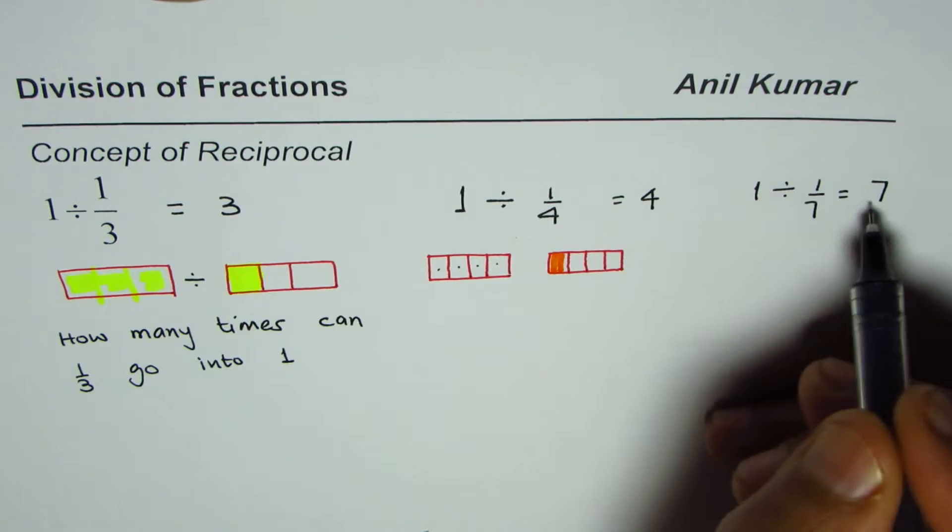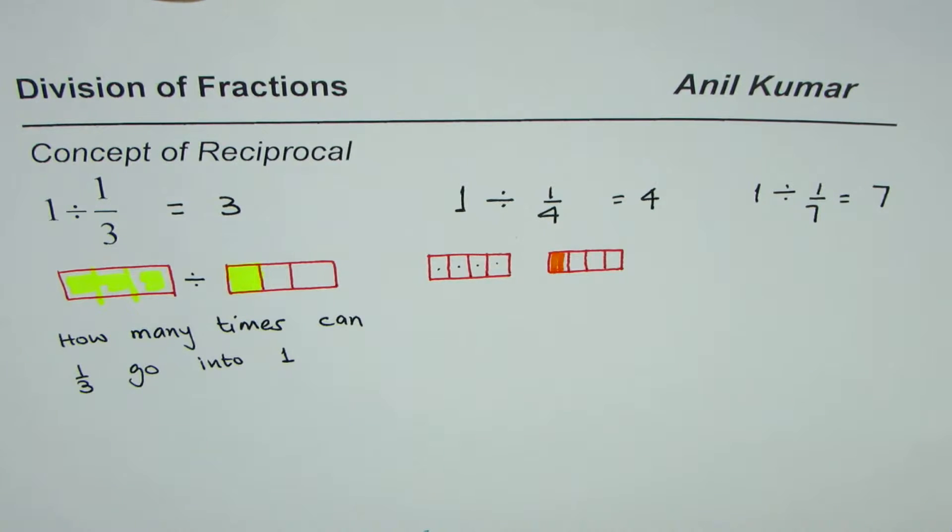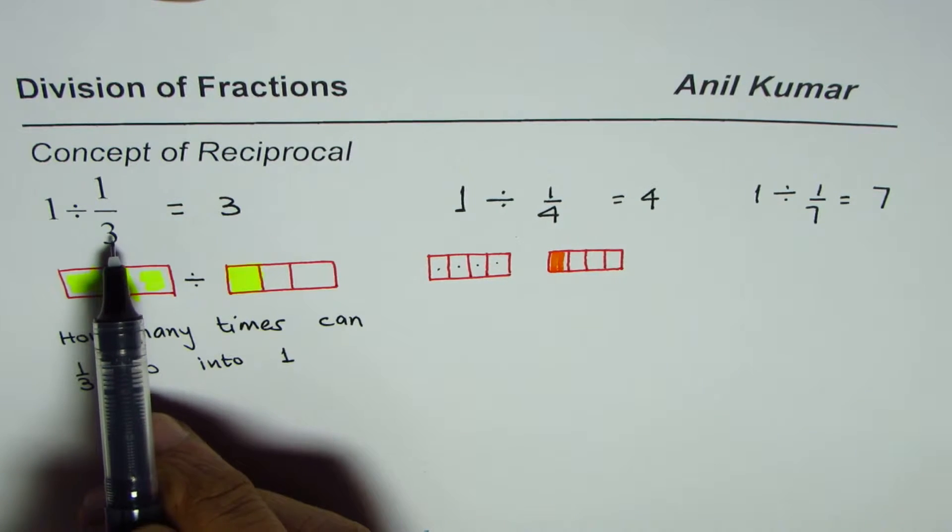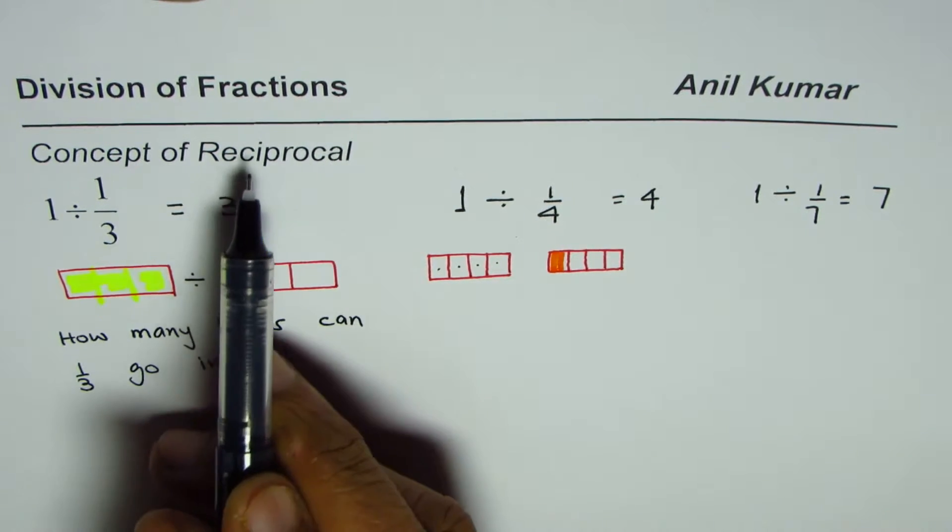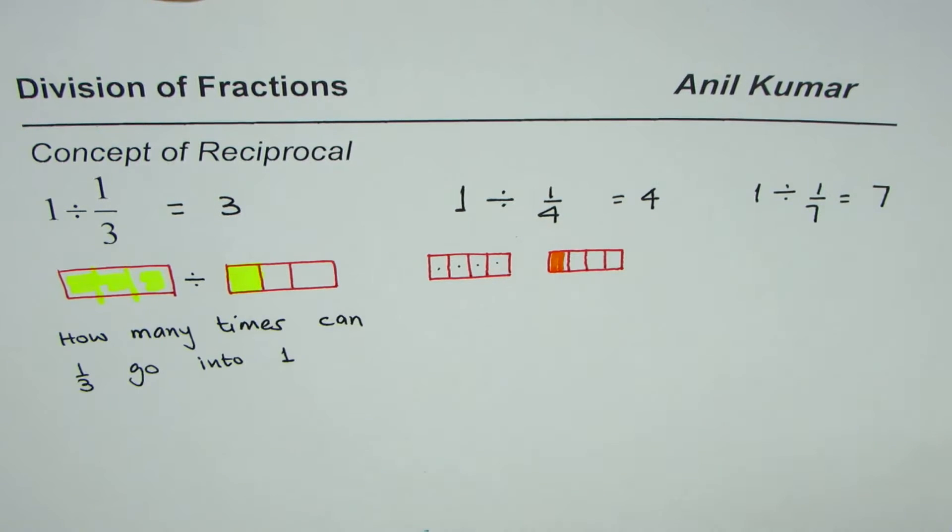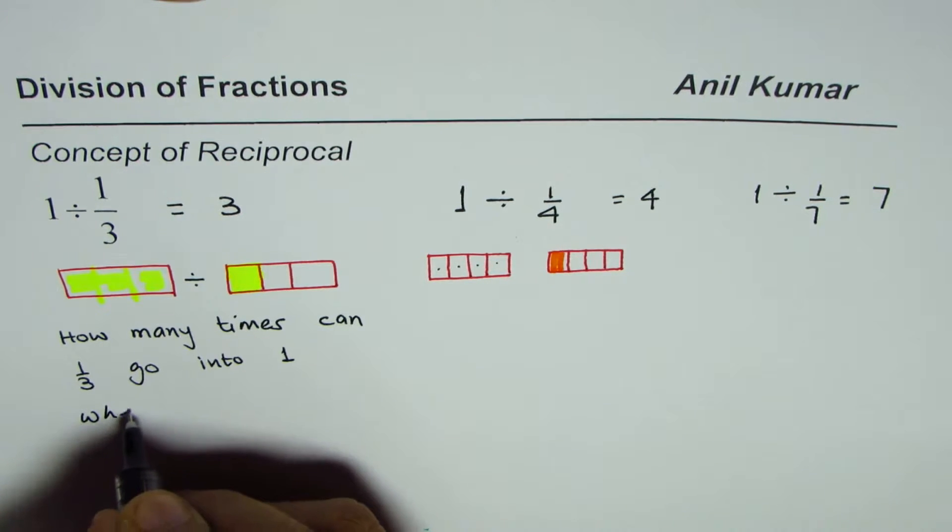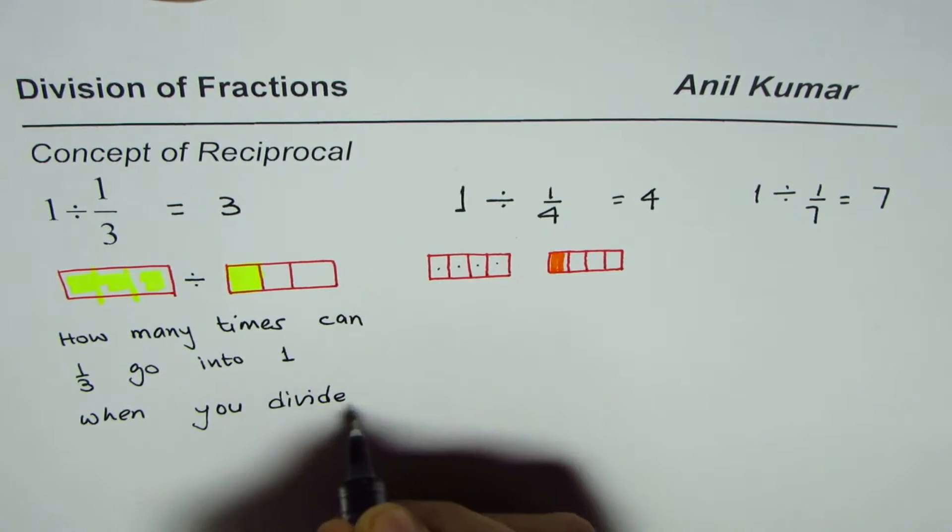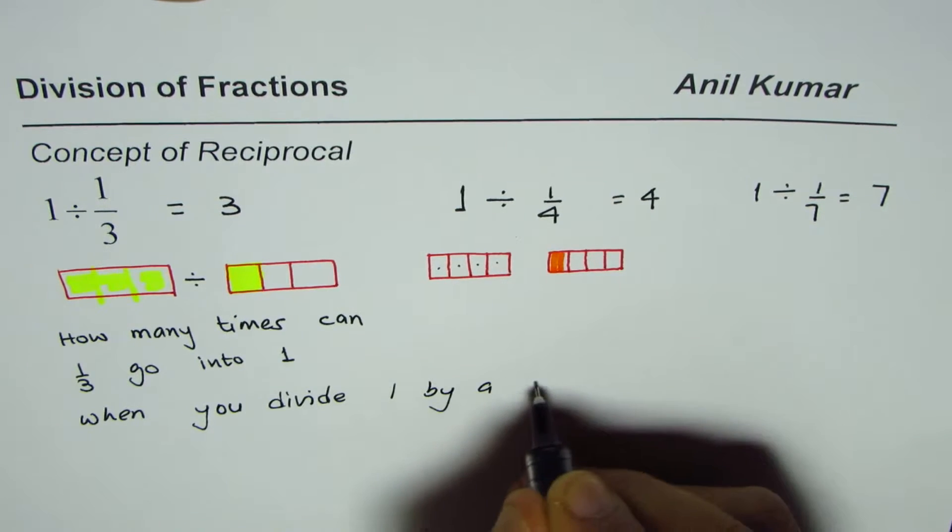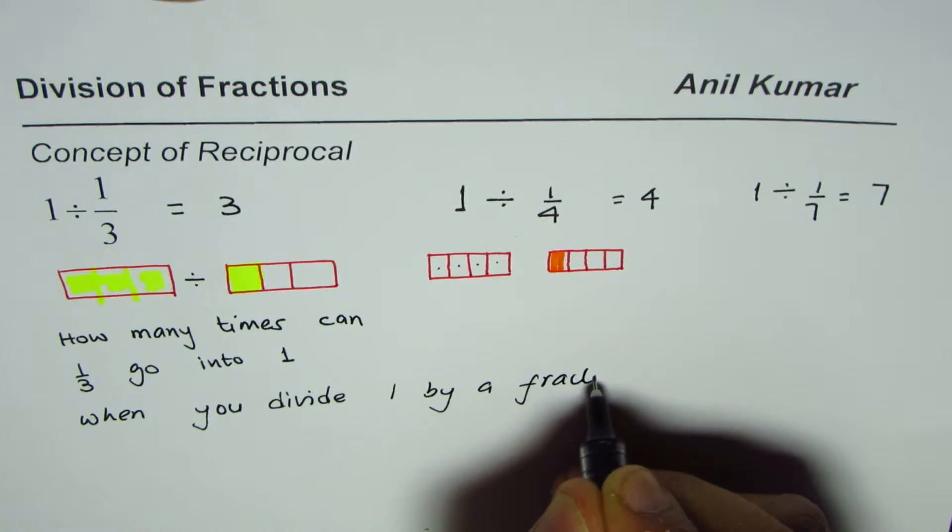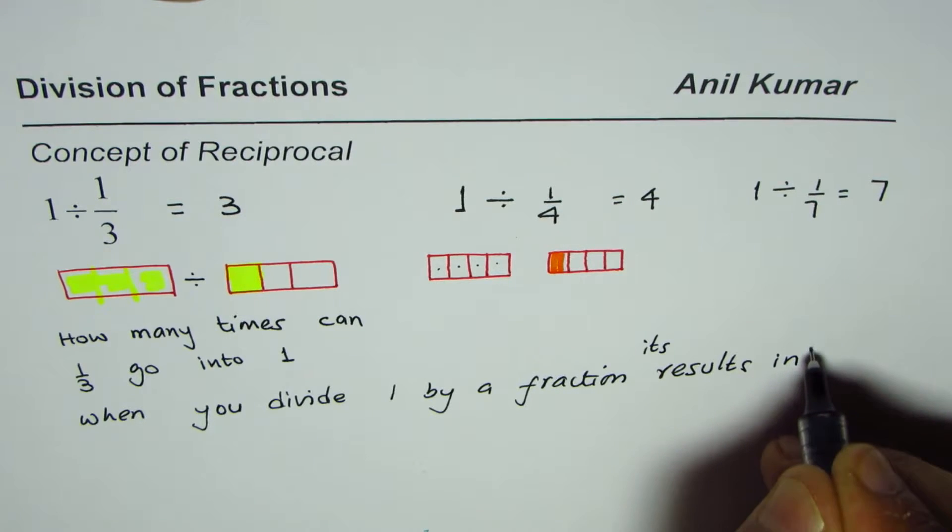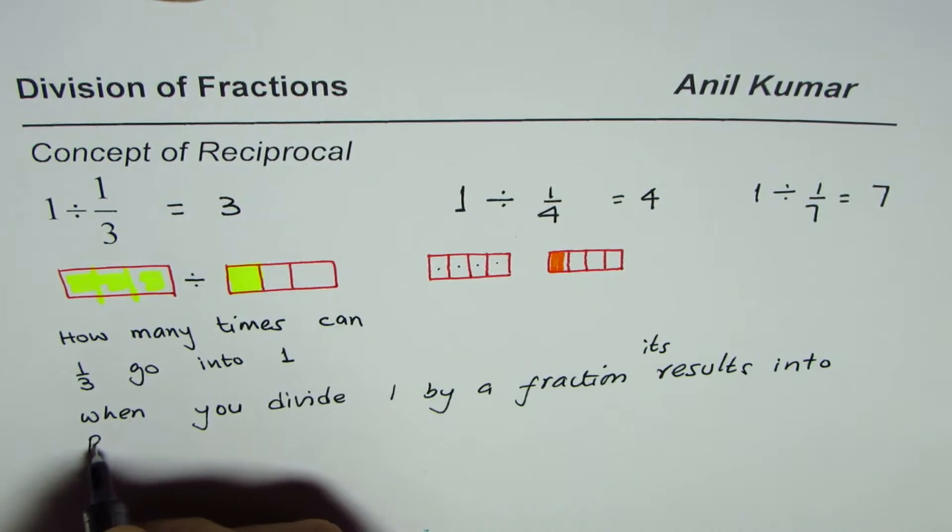So for that matter, one divided by let's say one over seven should be equal to seven, since one seventh can go seven times in one. So what do you see here? Whenever you divide one by a fraction, the answer is its reciprocal.